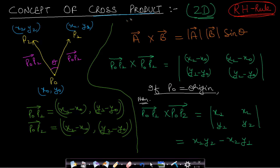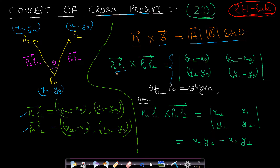Now let us look at the concept of cross product. For two vectors A and B, the cross product is |A||B| sin(theta). If we have two vectors P0-P1 and P0-P2 with angle theta between them, finding the cross product is equivalent to finding a determinant. The determinant uses coordinates (x1 minus x0, y1 minus y0) for P0-P1 and similarly for P0-P2. If P0 is the origin, this reduces to x1*y2 minus x2*y1.